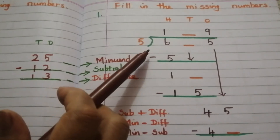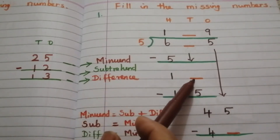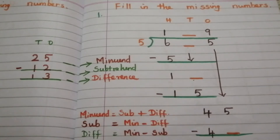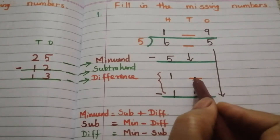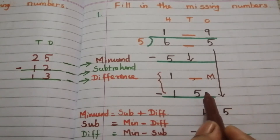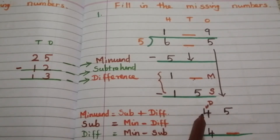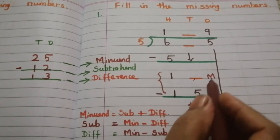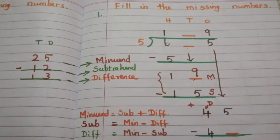This is our given problem and we have to find this missing number. This number and the other number shown are equal. In this subtraction, this is the minuend. To find the minuend, we add the subtrahend and the difference, which is 4. So 5 plus 4 gives us the minuend: 5 plus 4 is 9, so this dash is 9.